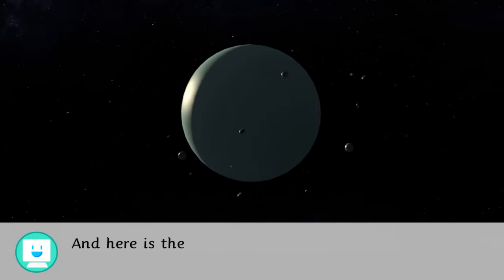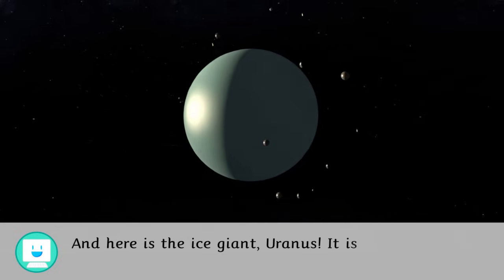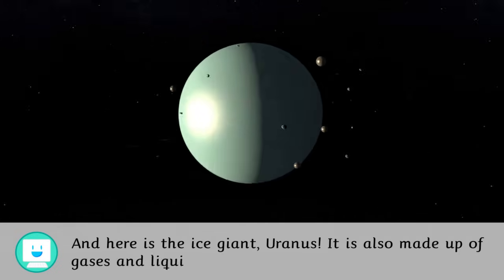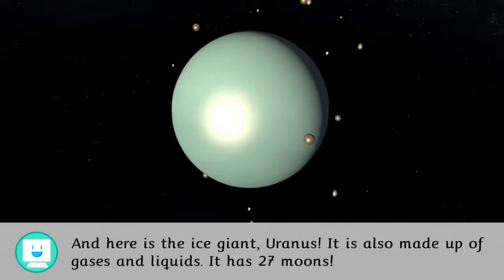And here is the ice giant Uranus. It is also made up of gases and liquids. It has 27 moons.